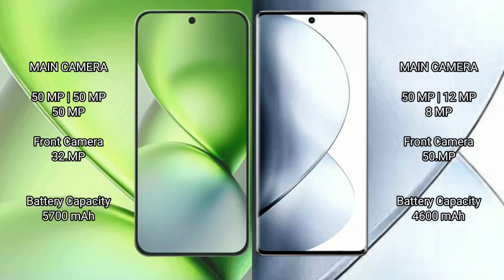The Vivo X200 Pro Mini features a rear triple camera setup with 50MP, 50MP, and 50MP sensors, and a 32MP front camera. The Vivo V29 Pro features a rear triple camera setup with 50MP, 12MP, and 8MP sensors, and a 50MP front camera.